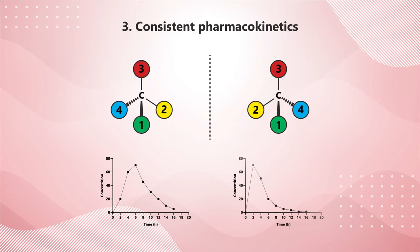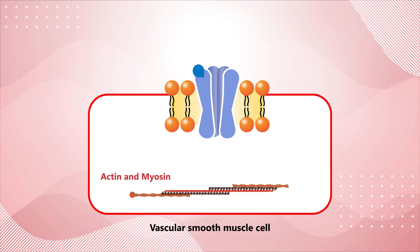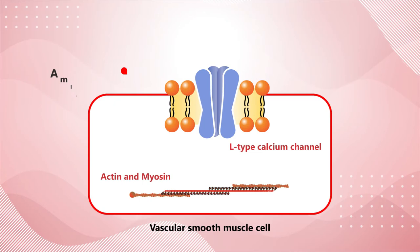Similarly, enantiomers could have different pharmacokinetics, and a chirally pure compound containing the enantiomer with favorable pharmacokinetics could improve dosing regimen and treatment. The contraction of actin and myosin in the vascular smooth muscle cells requires calcium, which enters the cell through the L-type calcium channel.